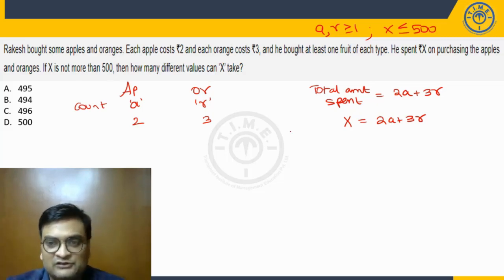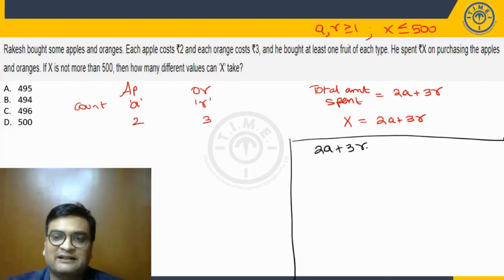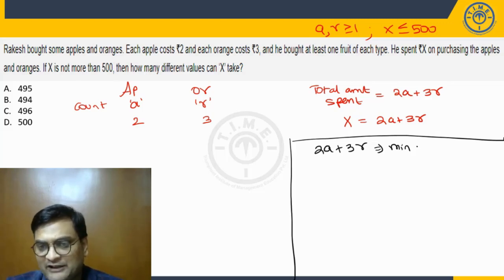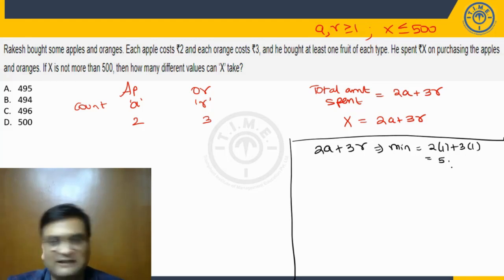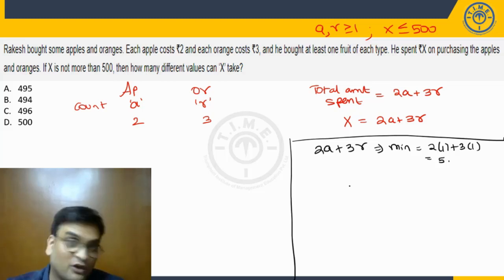Let's check. So 2A plus 3R, we have to focus on this expression here. Now can we say the minimum value for this particular expression will be when A is 1 and R is 1. That's the minimum value of A and R. So minimum value for this expression is going to be 2 into 1 plus 3 into 1, which is 5. Now after the minimum value is attained at A equal to R equal to 1, please check what other values are not possible.